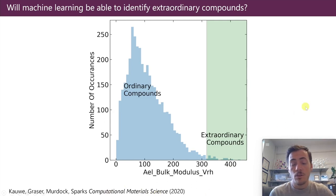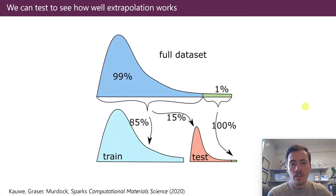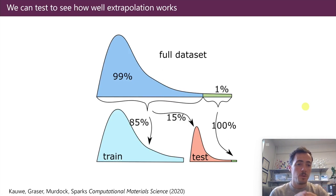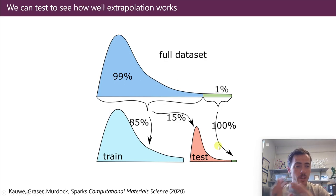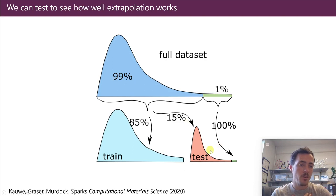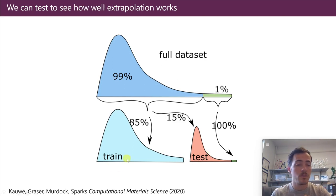That's the question we set out to answer in this paper, published in Computational Materials Science where I'm an associate editor. Here's how we went about it: we took our full dataset and carefully split it. We took the top 1% of all material properties and put them in the test set — so training never got to see that top 1%. Then we took 15% of the normal materials and added them to the test set as well, so we could see how well it did on all types. Everything else — the remaining 85% of our data — was available to train from.